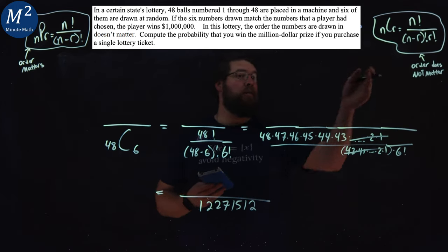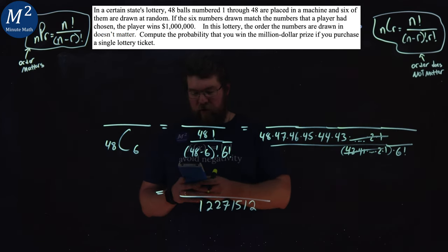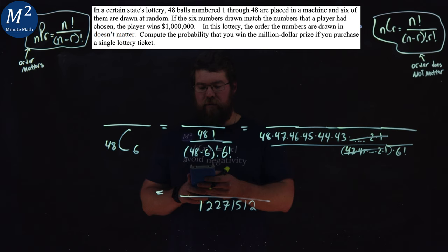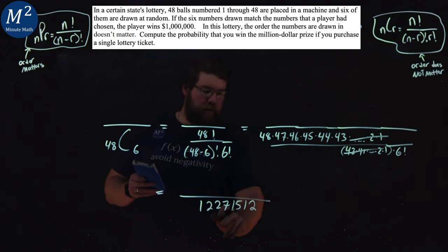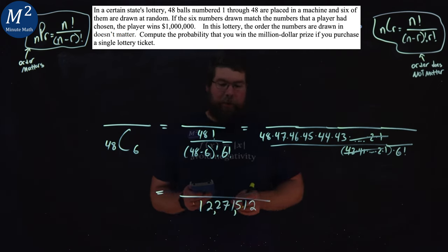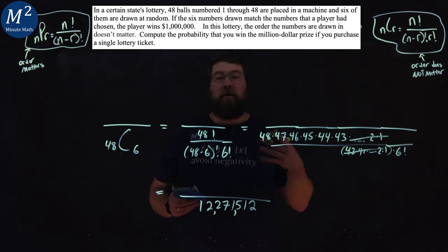And if I use the NCR function in my calculator, I can do 48 math, depending on what you have. The calculator does that. And I get the same exact number here. 12,271,512.